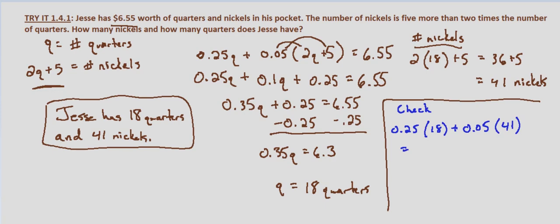That equals 4.5 plus 2.05, which does equal $6.55. So we've verified that our solution is correct: Jesse has 18 quarters and 41 nickels.